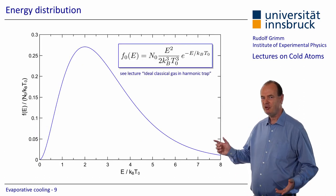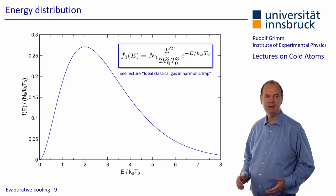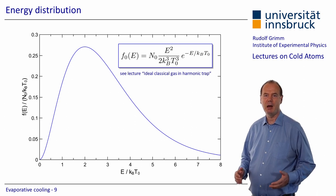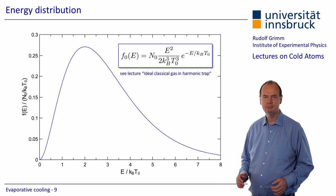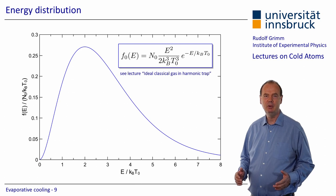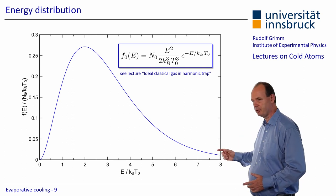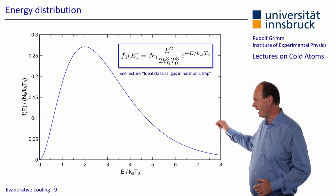Let us start with the energy distribution of atoms in a harmonic trap, as discussed in detail in one of my earlier lectures. Here we restrict ourselves to harmonic traps, but the generalization to other potentials is rather straightforward. The mean energy per particle in a 3D harmonic potential, as is well known from the equipartition theorem, is 3 k_B T, where k_B is the Boltzmann constant and T the temperature. We see that the distribution is rather broad and we have quite some atoms with high energies.